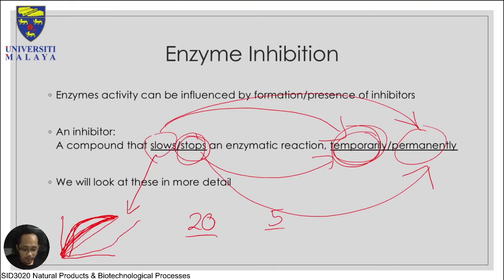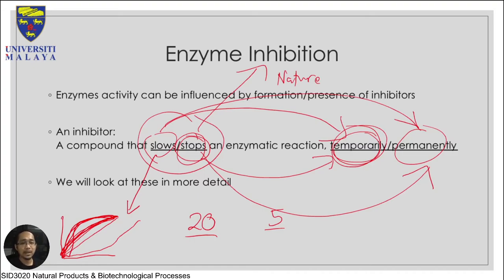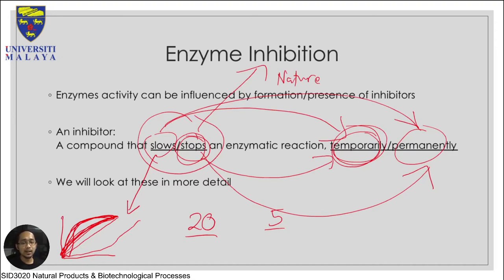Whether it slows down or stops depends on the nature of the inhibitor. If the inhibitor forms a covalent bond with the enzyme, you can guarantee it will stop the reaction. If it forms non-covalent forces or non-covalent bonds, there is a very high chance the inhibitor is slowing down rather than stopping the reaction. Something permanent normally forms a covalent bond, while temporary means it uses a non-covalent approach to inhibit the enzyme.